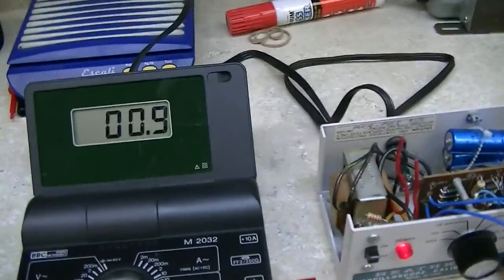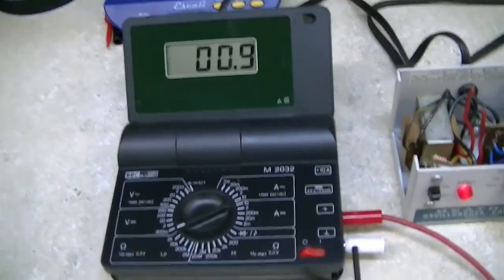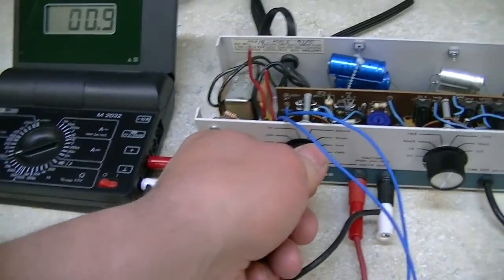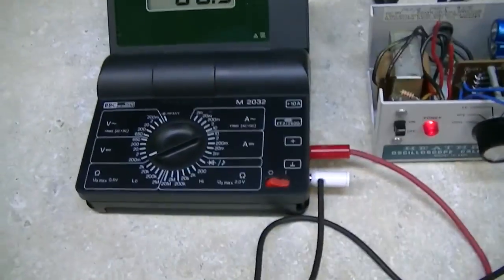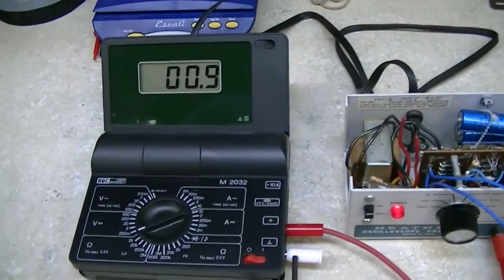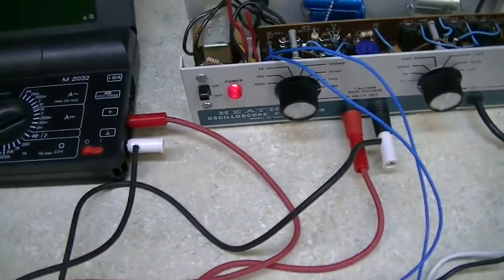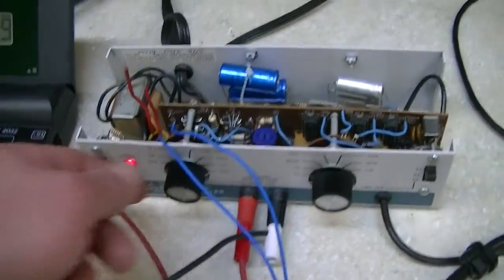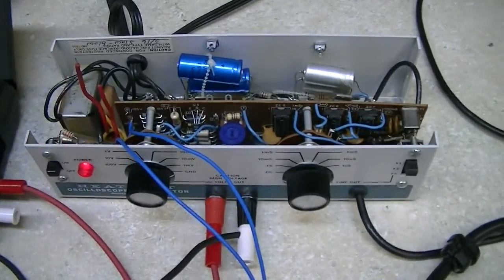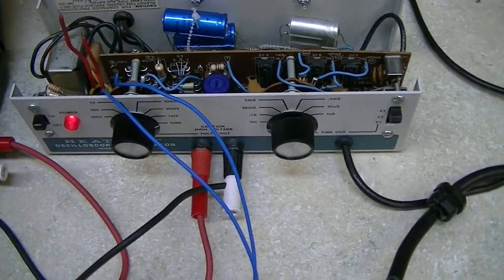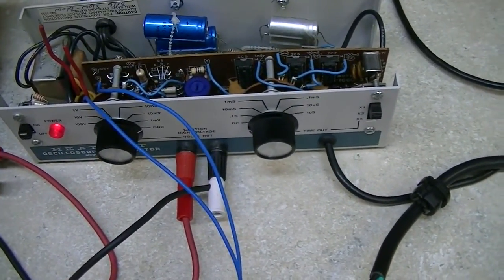And we've got 0.9 millivolts on the output which is pretty much normal, because I've found that the DC voltages on these, on the other calibrator that I have, isn't really very accurate at all.